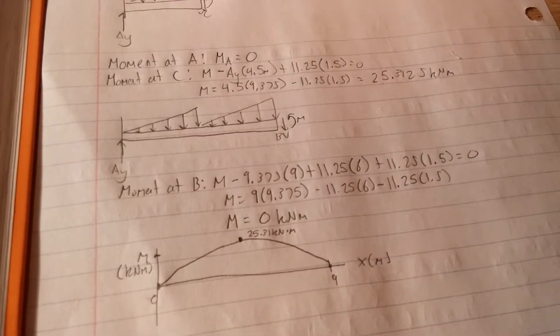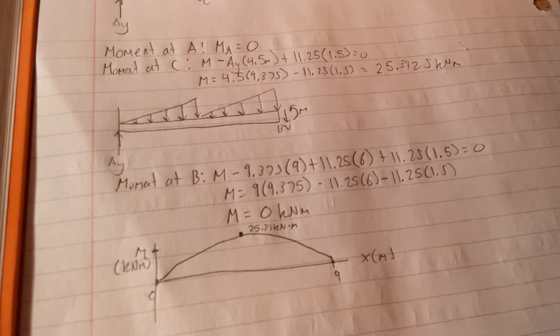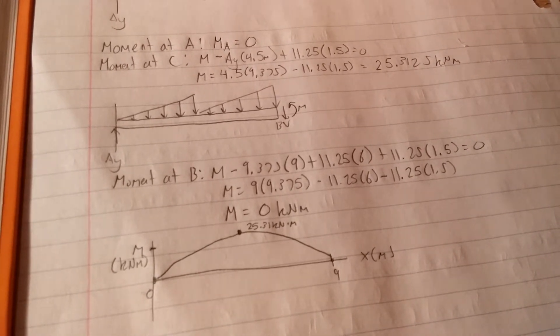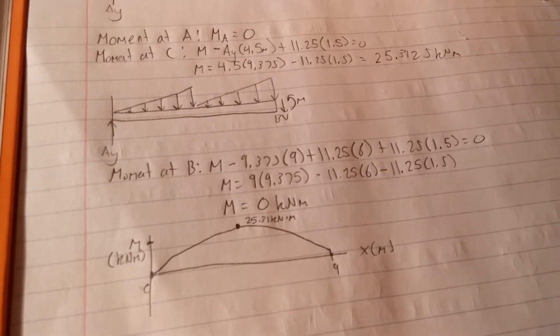Now all that's left is figure it out at B. It's the exact same thing. The result moment - A is going to create a negative moment. But now it's 9 meters away. So 9.375 times 9.